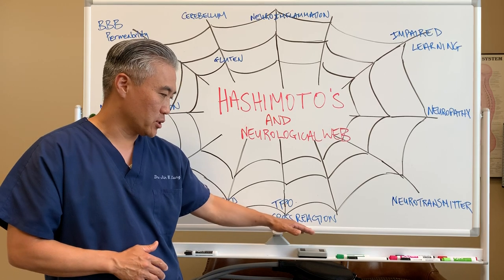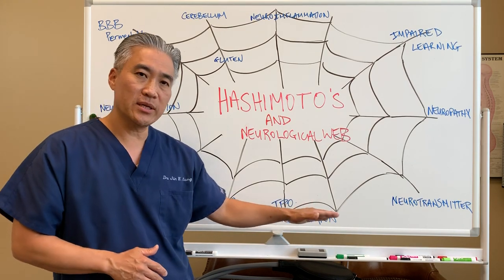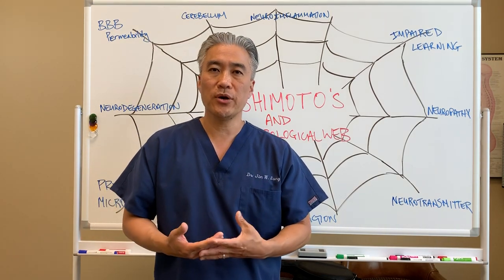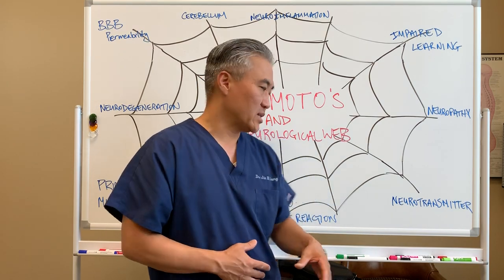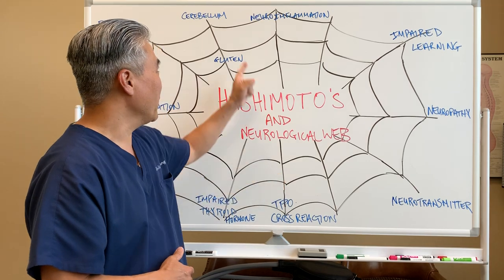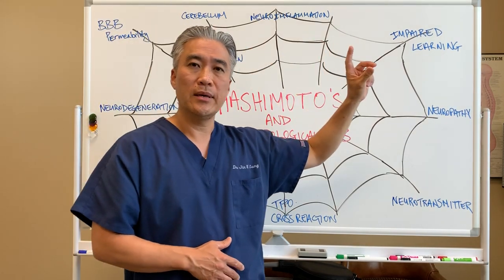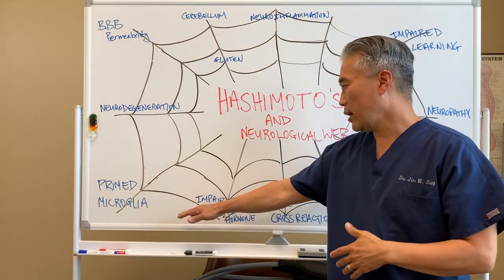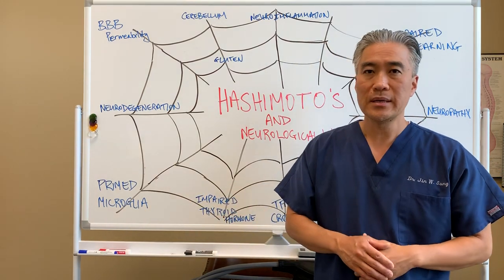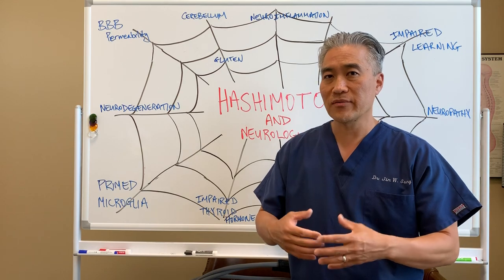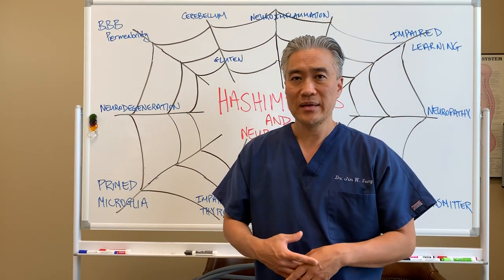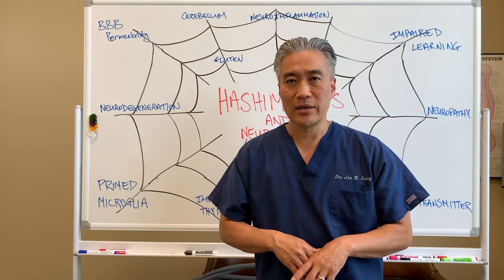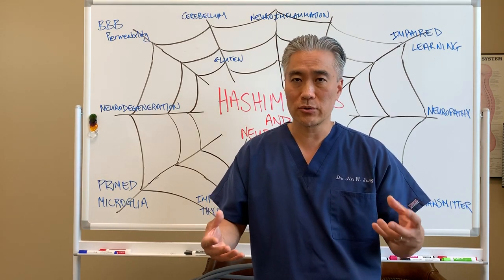TPO cross-reaction and cross-reactivity — TPO is the autoimmune marker for Hashimoto's thyroiditis. When you have TPO elevation, sometimes that elevation will pull on this web and affect the cerebellum, creating issues with balance and so forth. We also have something called primed microglia. Primed microglia means the immune cells of the brain have become primed and active, and it's hard to turn down, creating inflammatory cascades that can impact the entire brain and the function of neurotransmitters.